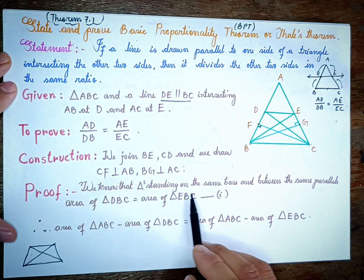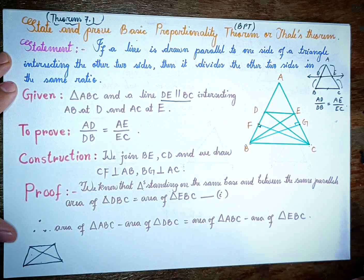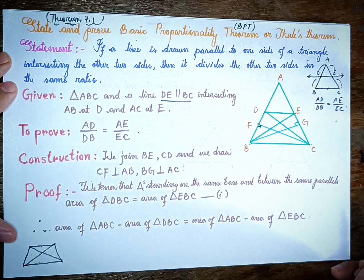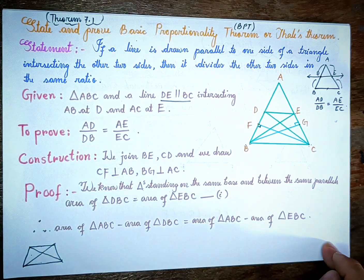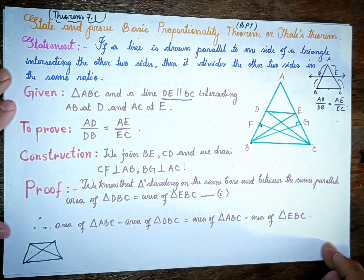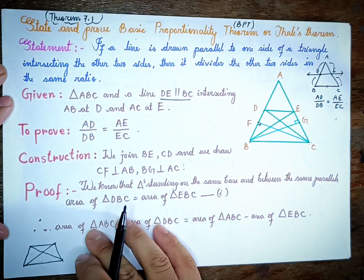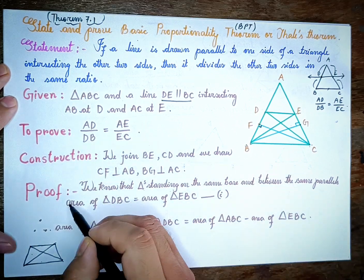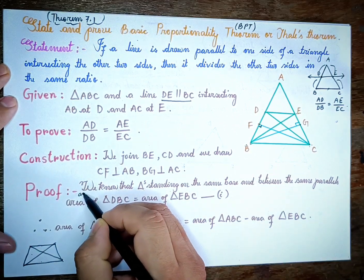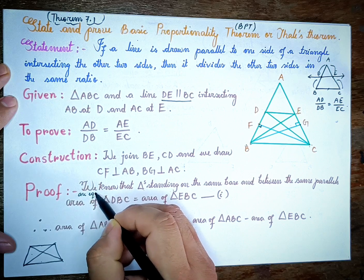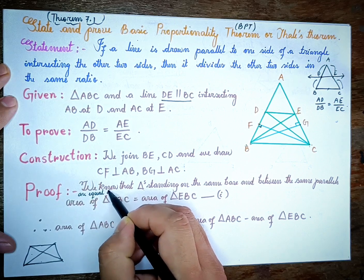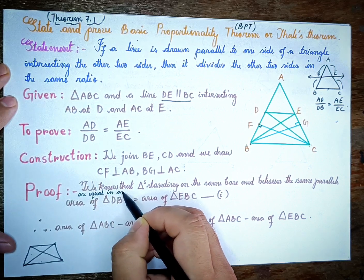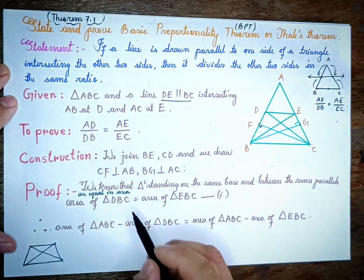We know that triangles standing on the same base and between the same parallels are equal in area.